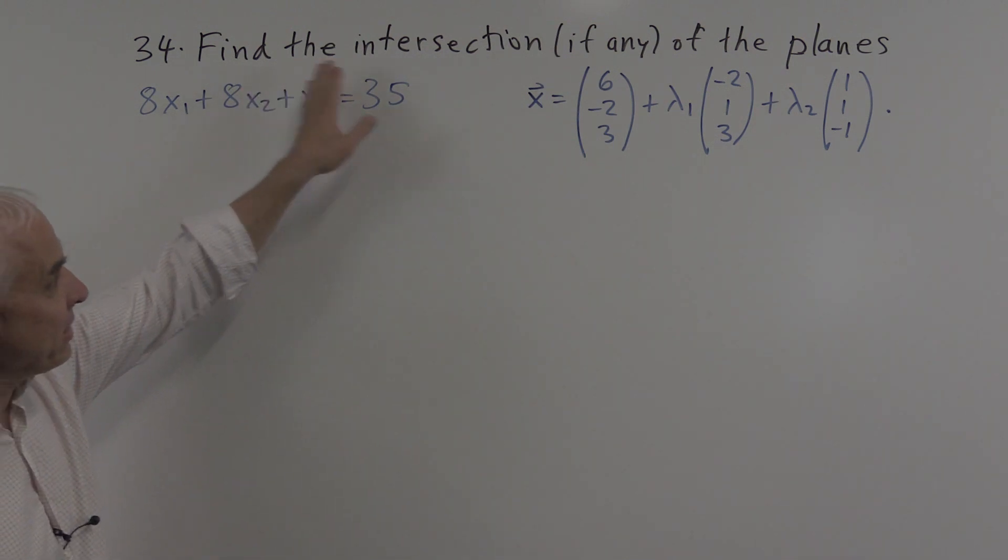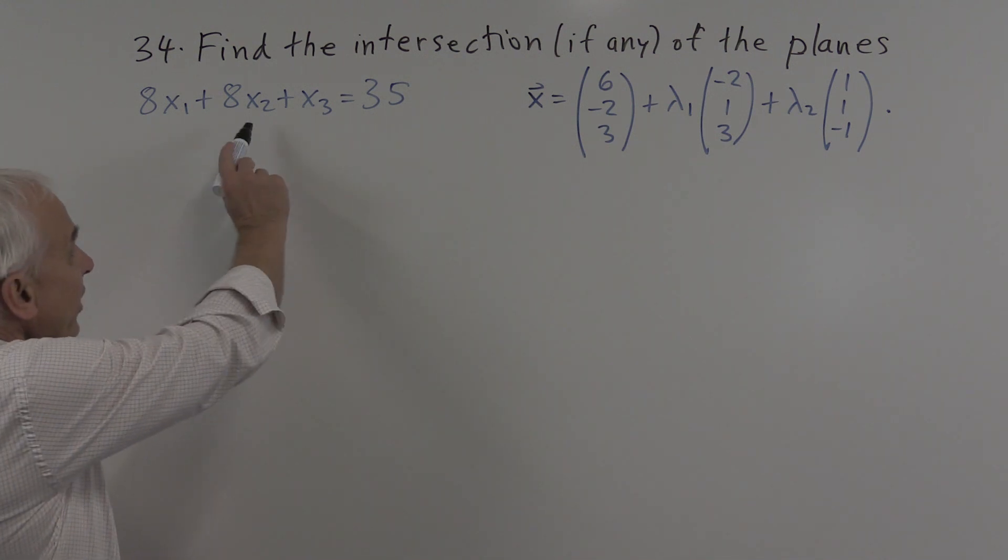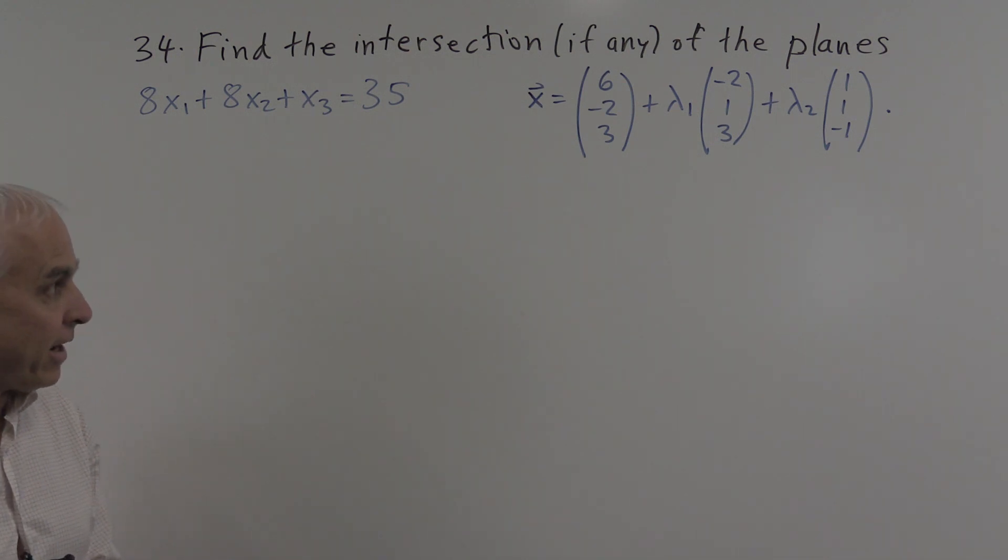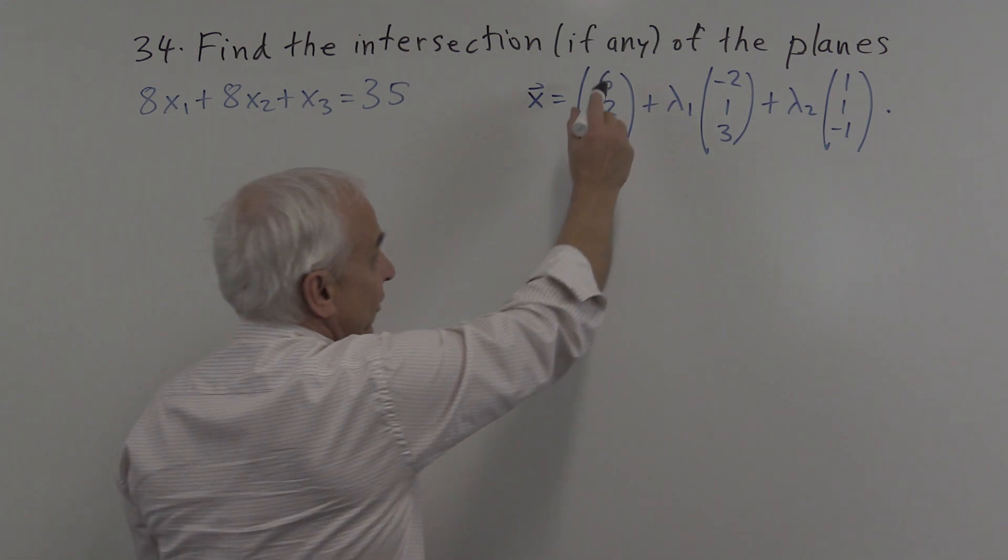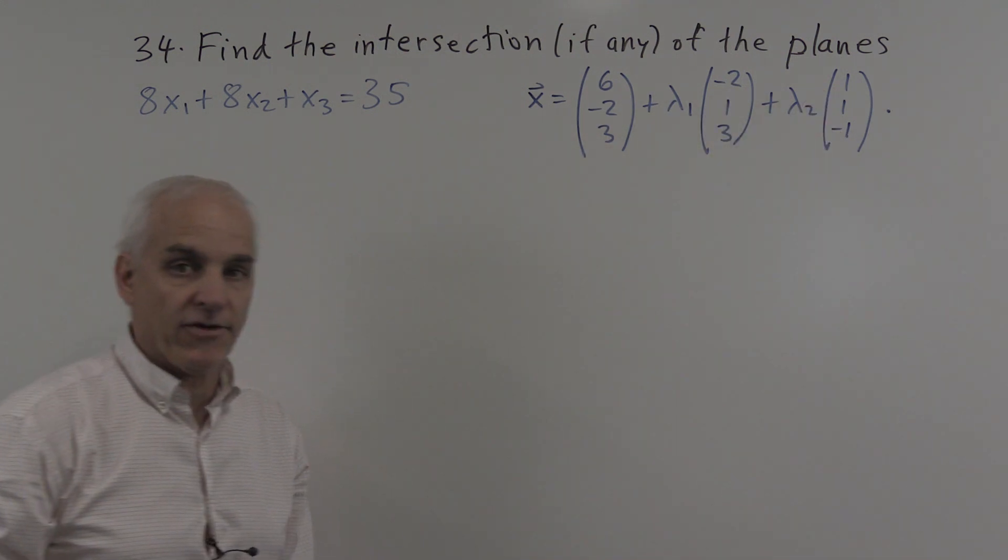The question is, find the intersection, if any, of the planes 8x1 plus 8x2 plus x3 equals 35 and x equals 6 minus 2, 3 plus lambda 1 minus 2, 1, 3 plus lambda 2, 1, 1 minus 1.